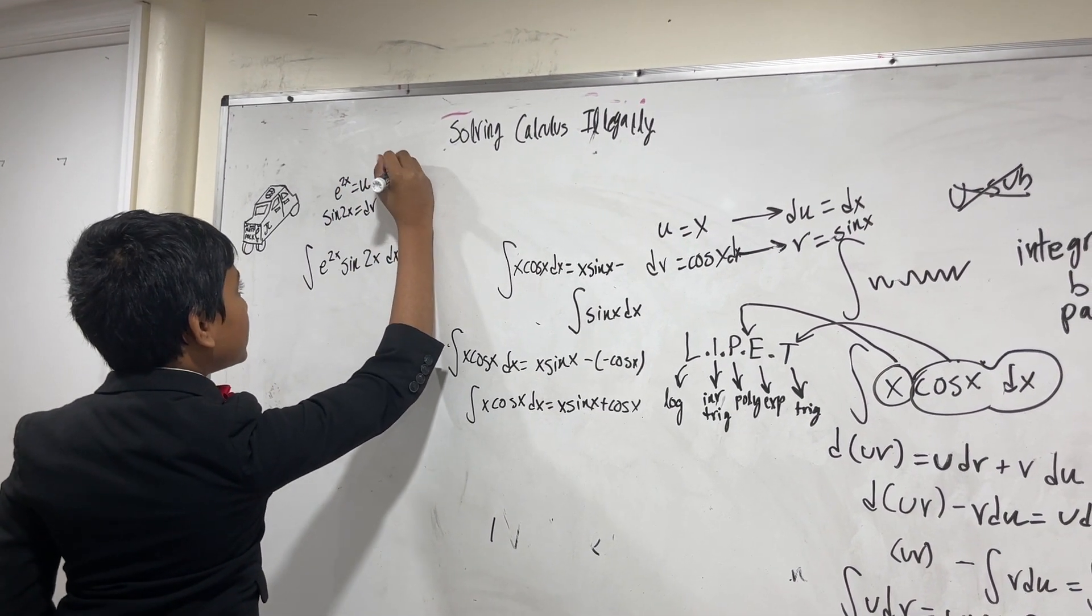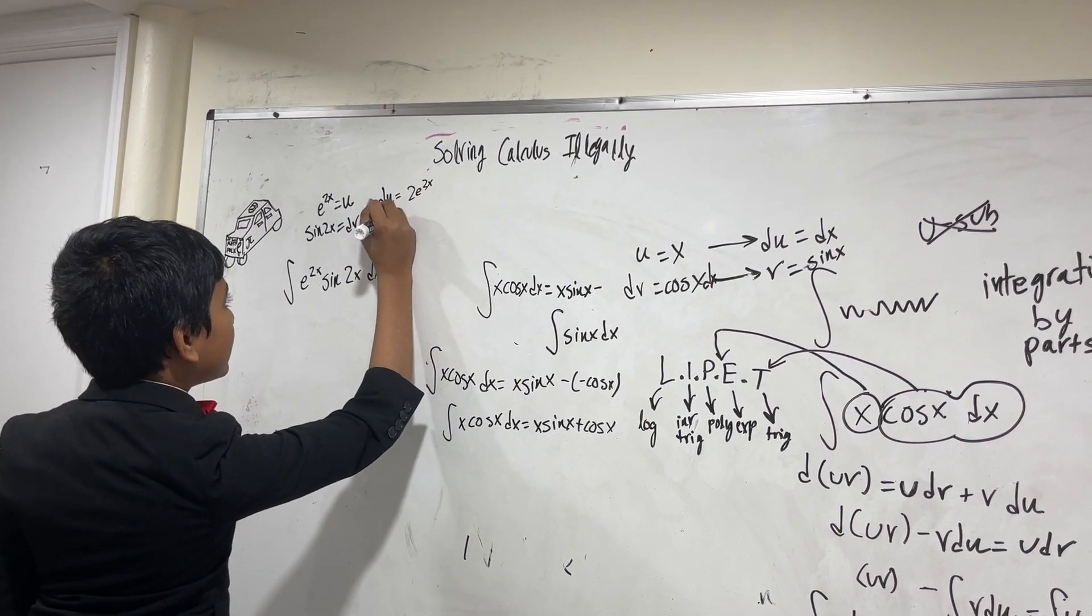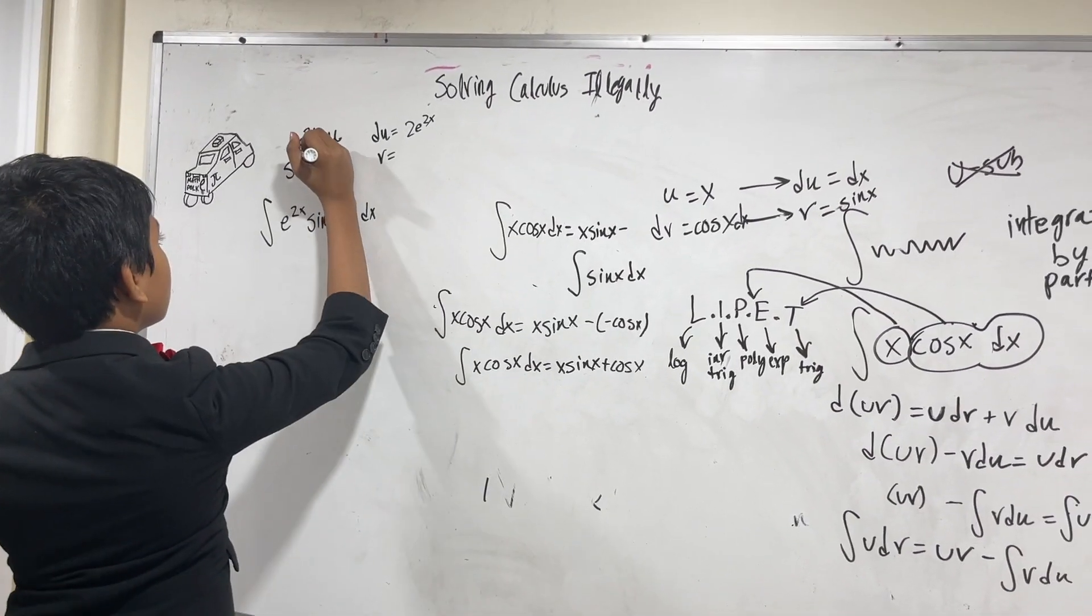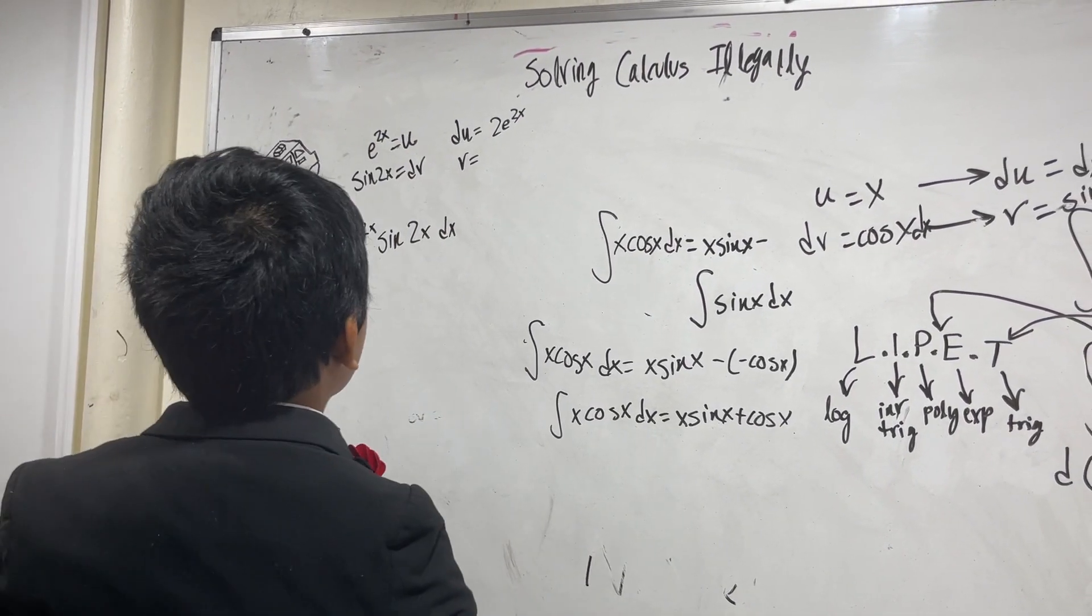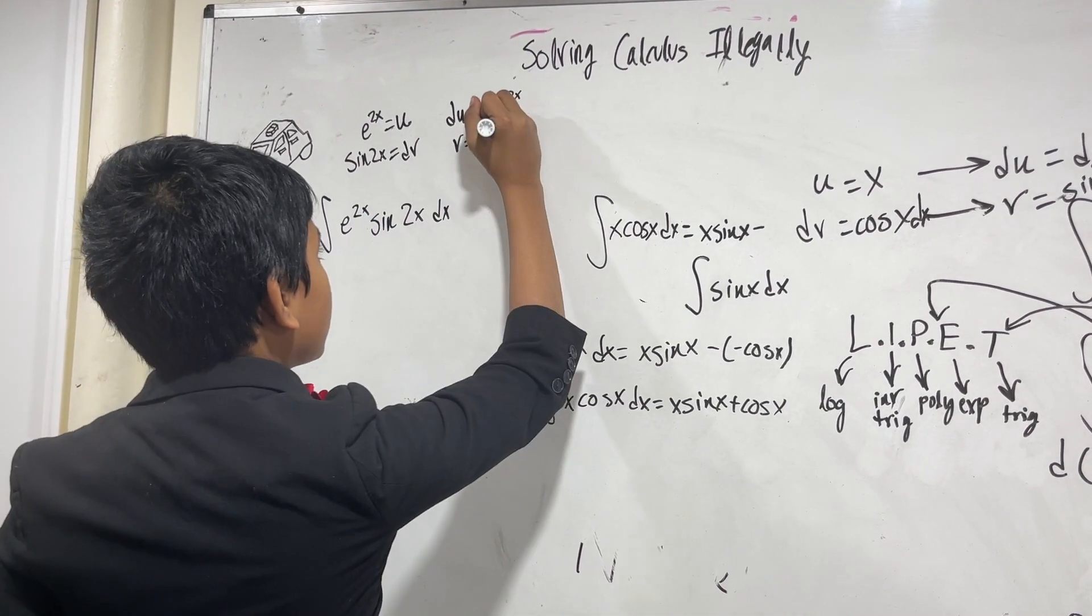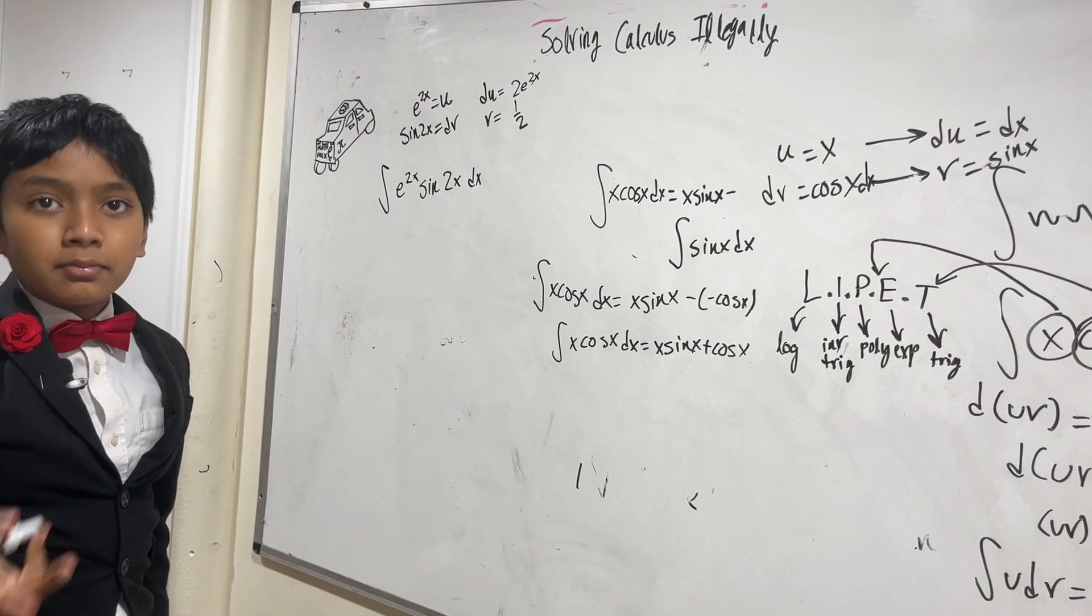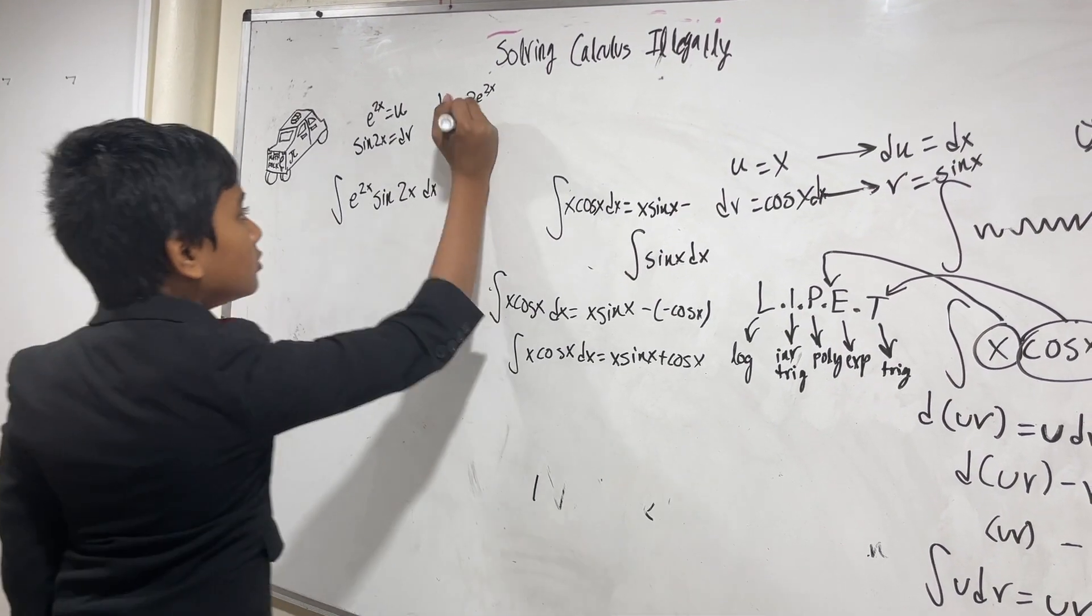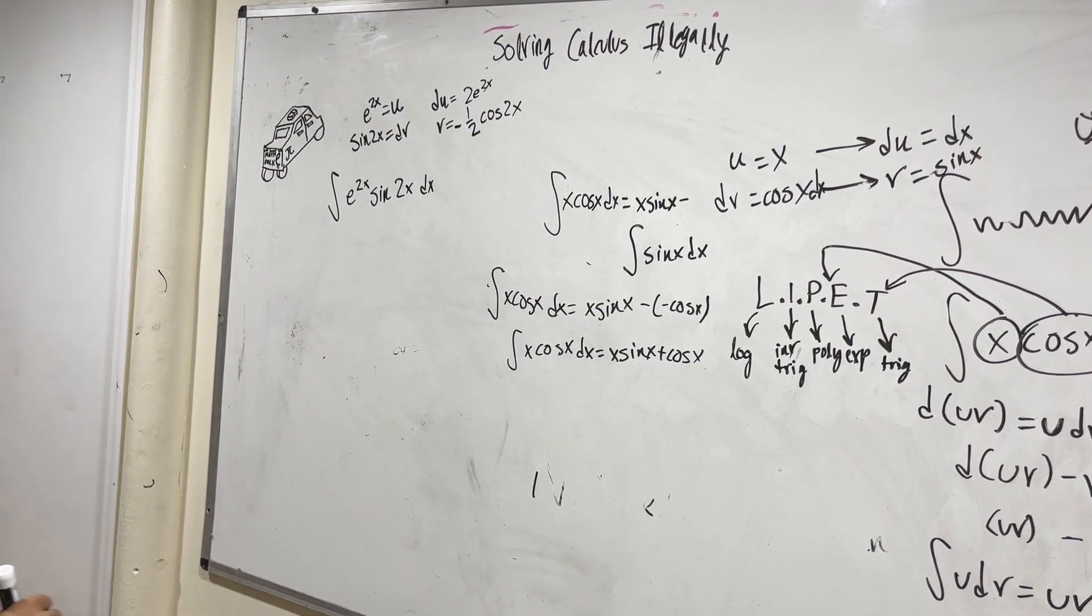That means that du is going to be 2e^(2x), that's pretty trivial. And then v, you actually got to think hard on this one. You've got to take whatever's inside this little guy and then take the reciprocal of the derivative. The derivative of 2x is 2, taking the reciprocal is 1 half, and then the integral of sine x normally is minus cosine x.